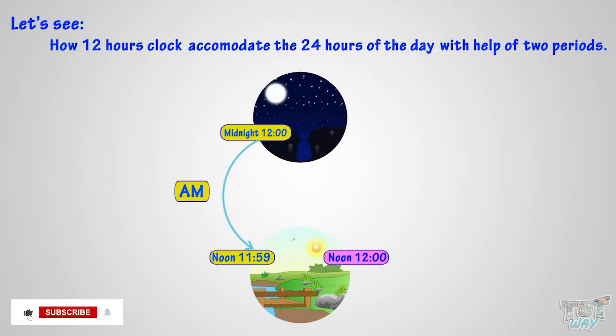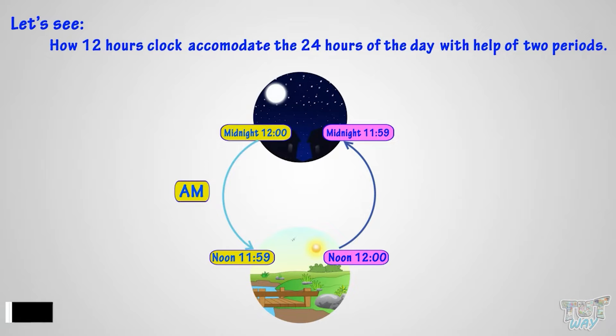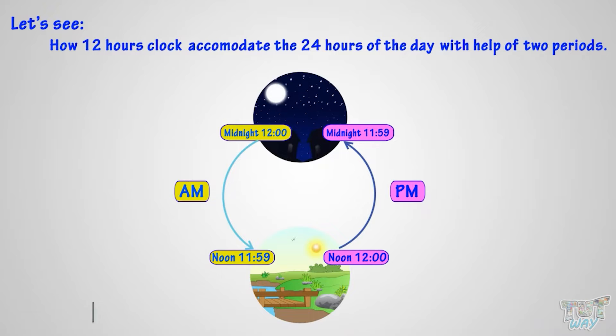The time from noon 12 to midnight — more precisely, 11:59 at night — is called p.m. time.